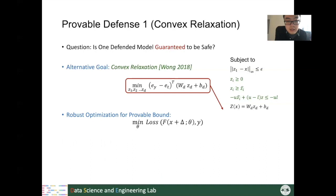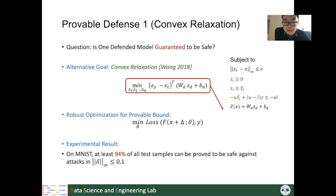They also use this certified bound to do robust optimization, similar to adversarial training, minimizing the loss on the found optimal perturbation delta. Experimental results on the MNIST dataset show that at least 94% of all test samples cannot be attacked by any perturbation constrained by L-infinity smaller than 0.1. Another type of provable defense is semi-definite programming relaxation. In 2019, another state-of-the-art certified defense called randomized smoothing was introduced.